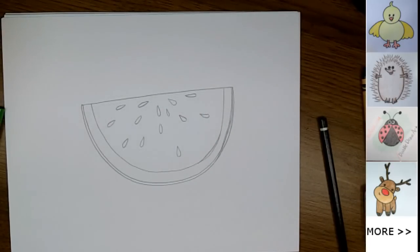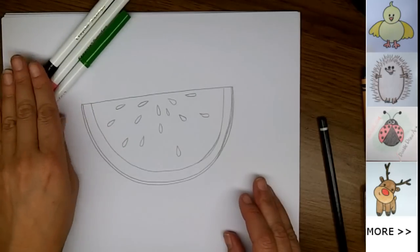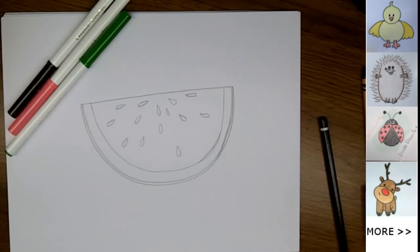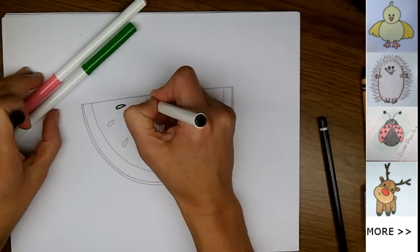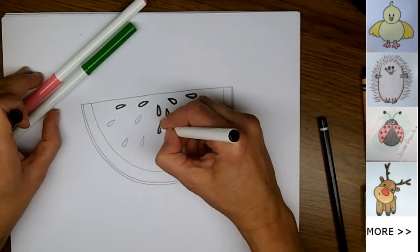This is how you draw a watermelon. Now I'm going to outline my lines in marker and erase my sketch lines and color it. So I hope you enjoyed watching me draw this watermelon. I hope you drew one too.